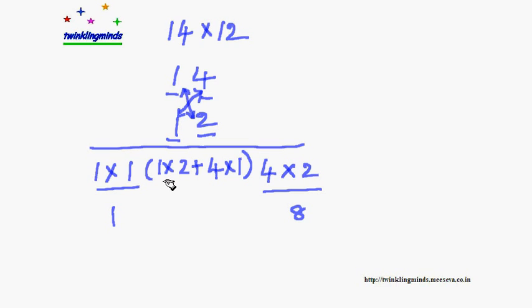Multiply 1 with 2, it will be 2. And multiply 1 with 4, it's 4. So if you add these two numbers, it is 6. So if you multiply 14 with 12, the answer is 168.